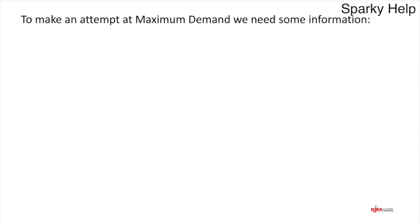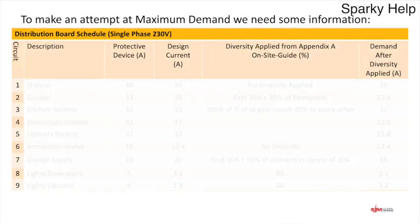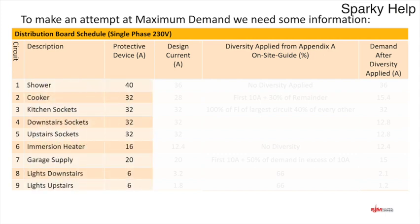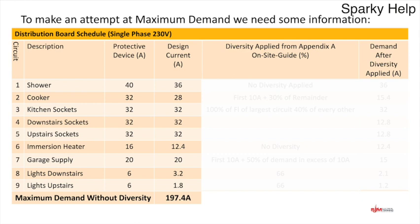Let's work through a typical domestic installation. I've put together a standard distribution board schedule — a single-phase installation with circuits 1 to 9: shower, cooker, kitchen sockets, downstairs sockets, upstairs sockets, immersion heater, garage supply, downstairs lights, and upstairs lights, with their protective devices and design currents shown. Without any diversity applied, adding all the design currents gives a maximum demand of 197.4 amps, which is obviously quite large, so we can apply diversity from the On-Site Guide.